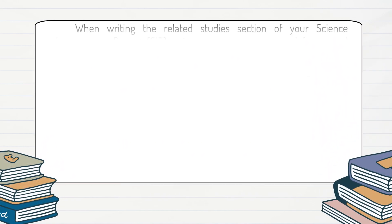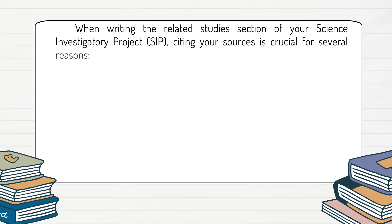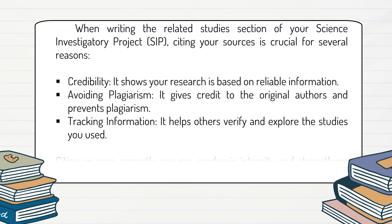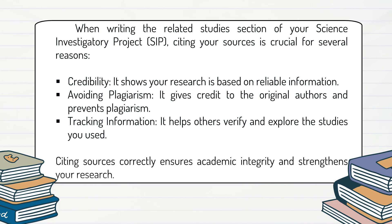When writing the related studies section of your science investigatory project, citing your sources is crucial for several reasons. Credibility: it shows your research is based on reliable information. Avoiding plagiarism: it gives credit to the original authors and prevents plagiarism. Tracking information: it helps others verify and explore the studies you used. Citing sources correctly ensures academic integrity and strengthens your research.